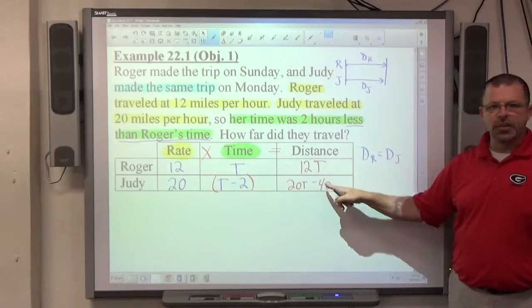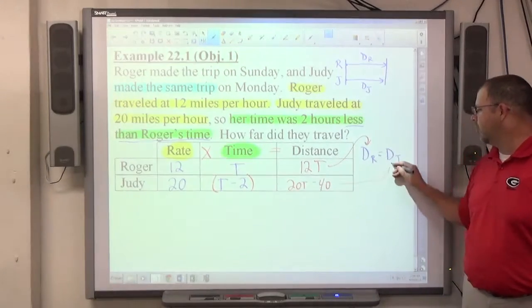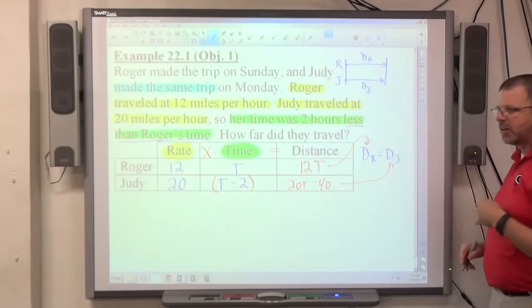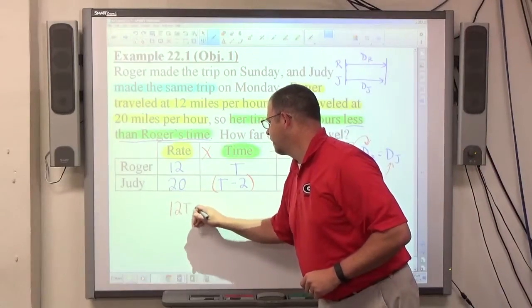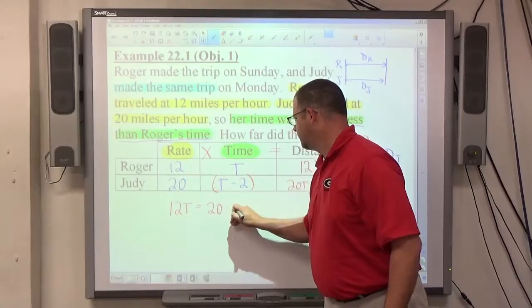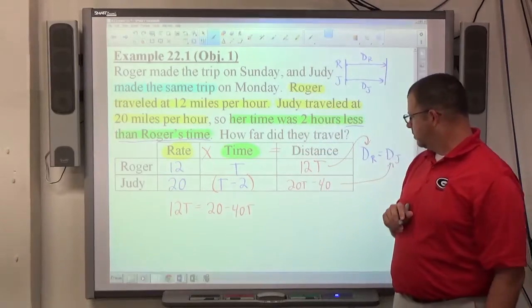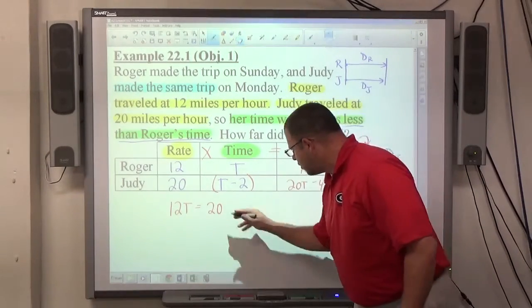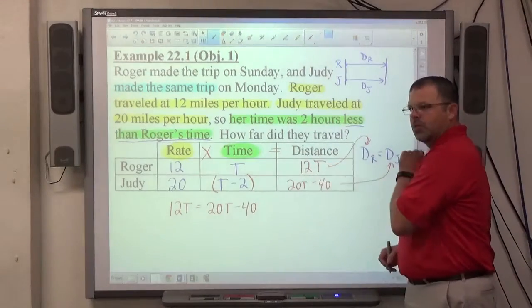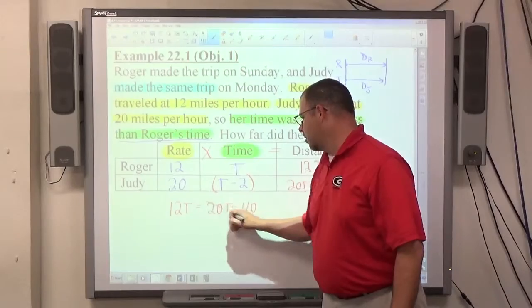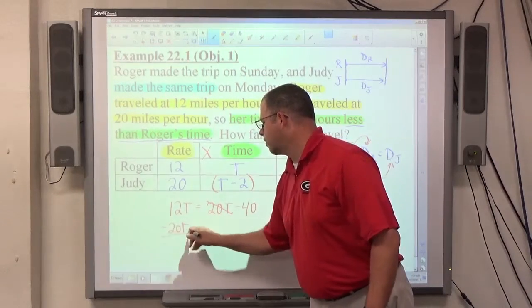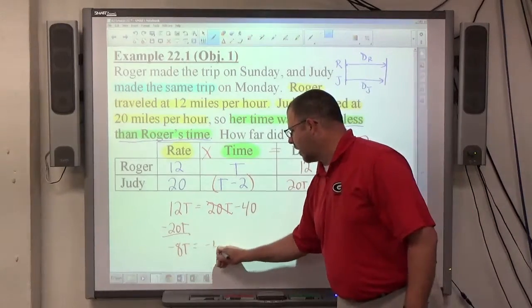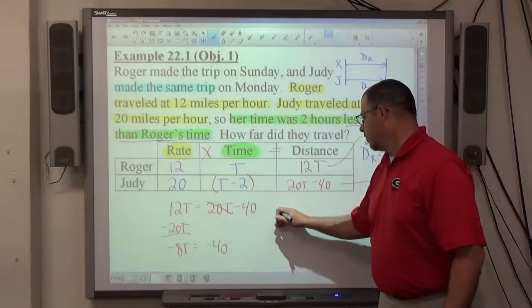Once I have my distance expressions figured out, Roger's distance is equal to Judy's distance. I take my distance expression that I figured out, my equation, and replace it with the objects representing their distances. So, 12t equals 20t minus 40. Roger's distance equals Judy's distance. Easiest way to solve, for my opinion, is going to be move 20 over here. So, minus 20t goes over there. 12t minus 20t makes negative 8t. Negative 40 is left on the right-hand side. Divide both sides by negative 8. You're going to end up with t is equal to 5 hours.